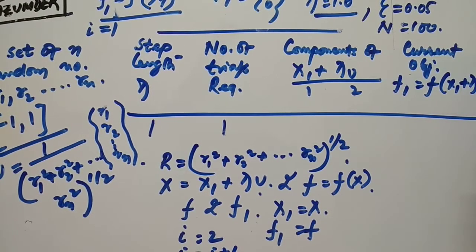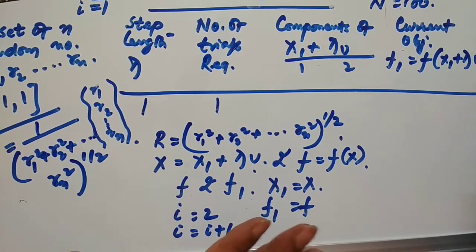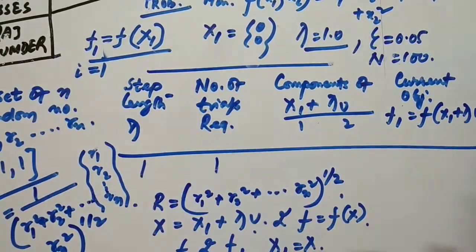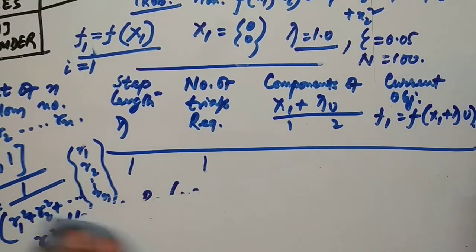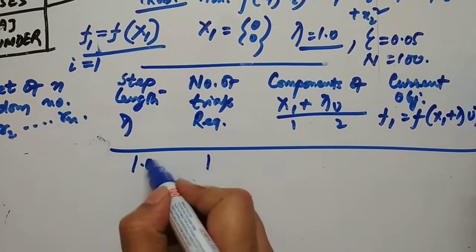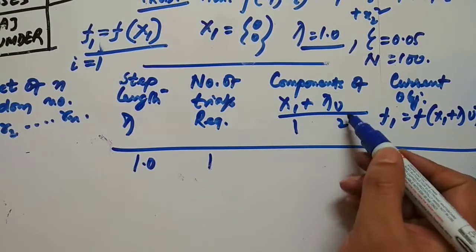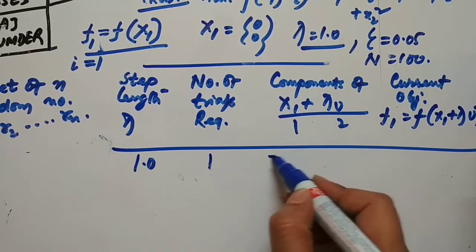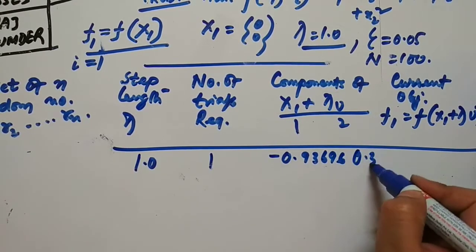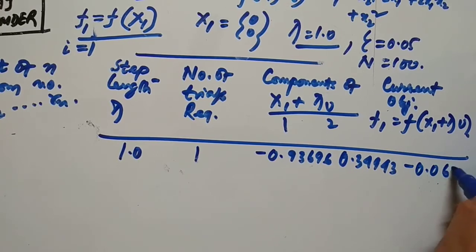For this particular example, if you iterate as described, for trial 1 with step length 1.0 you get x1 = 1, lambda*u = 2, with component values approximately 0.93696 and 0.34943, giving a function value of approximately 0.06329.